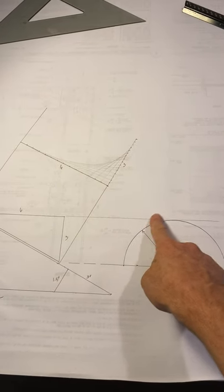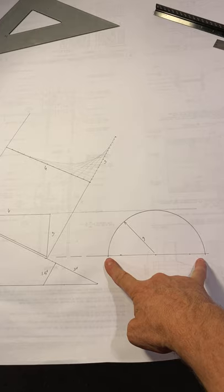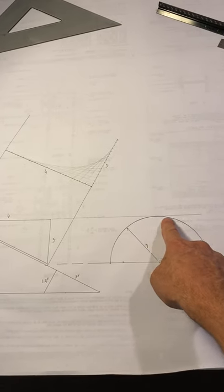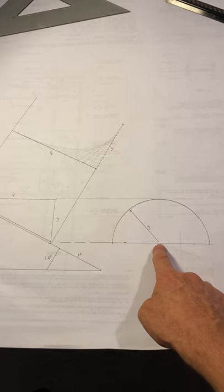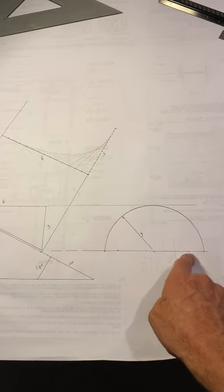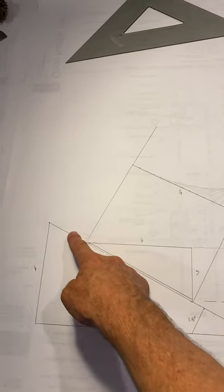So take a look at this. A buddy of mine wants to build an eyebrow dormer on his roof. So from the front, it's six foot wide and it's a three foot radius. So the center of three feet, pull a radius, and it's dying out on a 6-12 pitch roof.